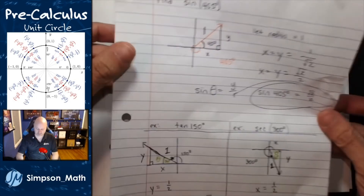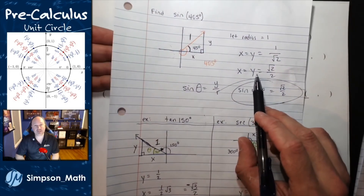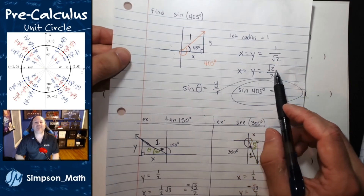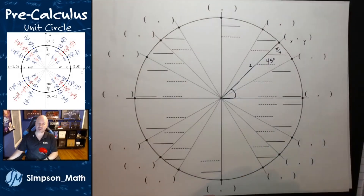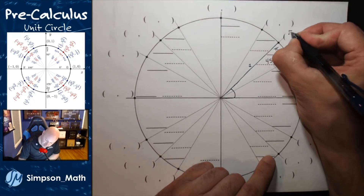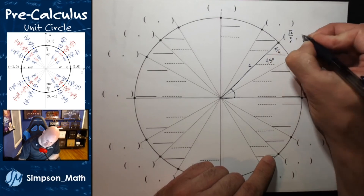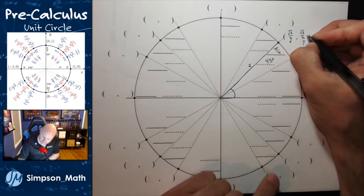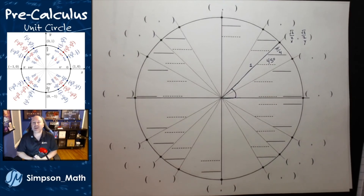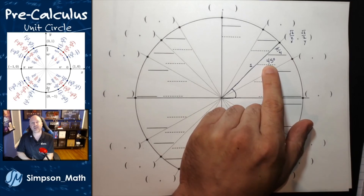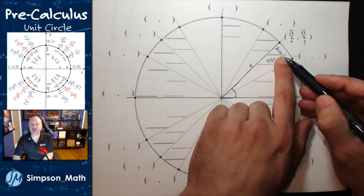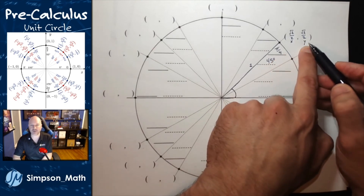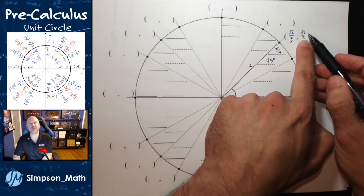As a reminder, we found that x and y were the same because it's isosceles, and that value is root 2 over 2. Because we're in quadrant 1, both of those values are positive. So this coordinate is (root 2 over 2, root 2 over 2). If I ask you for the sine value of 45 degrees and I have this circle in front of me, sine is just represented by the y value. So sine of 45 degrees is root 2 over 2.